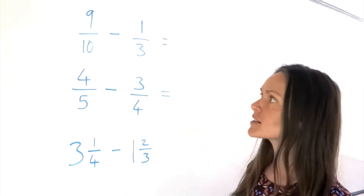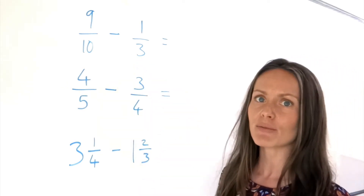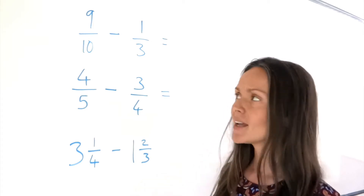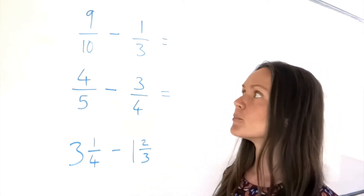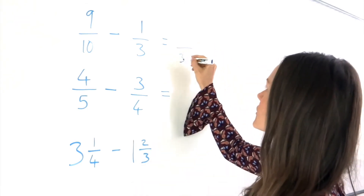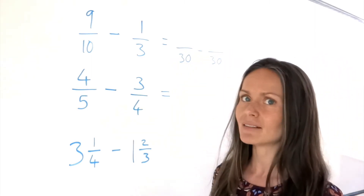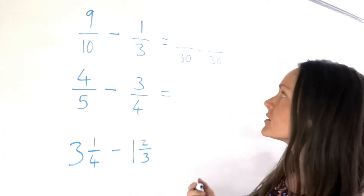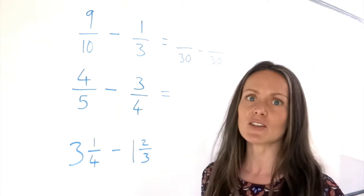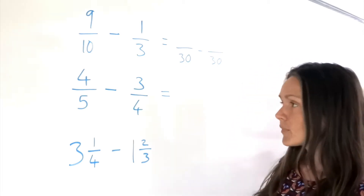In the first example, we need to find the lowest common multiple of 10 and 3. The lowest common multiple is sometimes written as LCM, and it's basically the smallest number that both 10 and 3 fit into exactly. In this one, it's going to be 30. It doesn't matter if you can't find the LCM, as long as it's a number that both 10 and 3 fit into exactly — it just means you'll have to do some simplifying further on in the calculation.